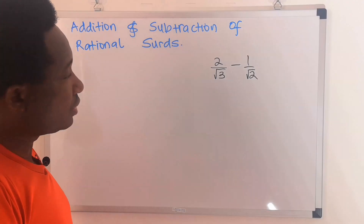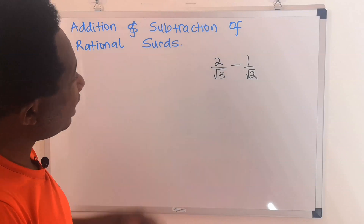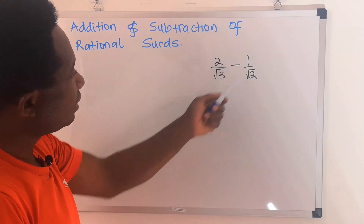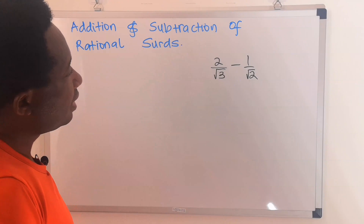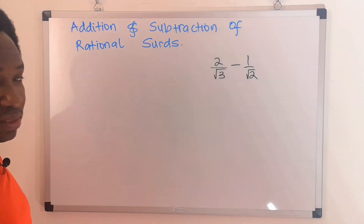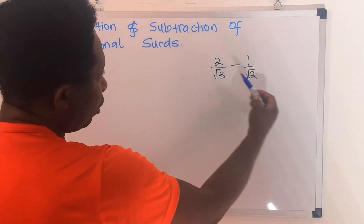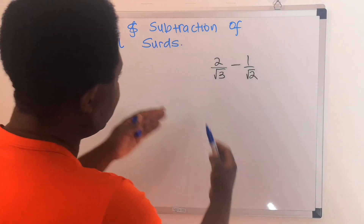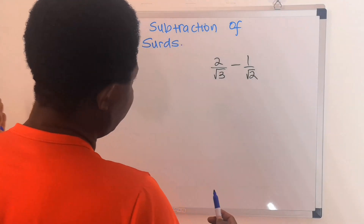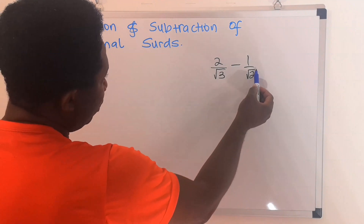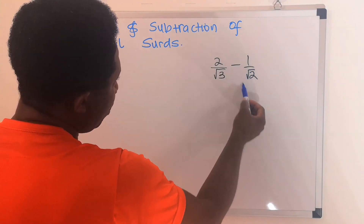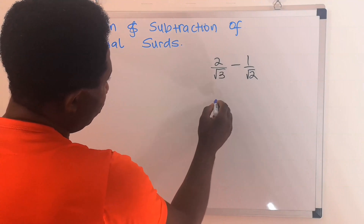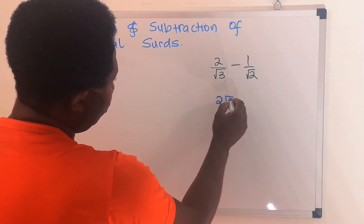Let us now consider 2 divided by the square root of 3 minus 1 divided by the square root of 2. Step number 1. We are going to move towards the left first, and we are going to have the square root of 2 multiplied by 2, giving us 2 root 2.